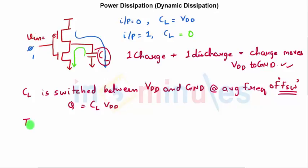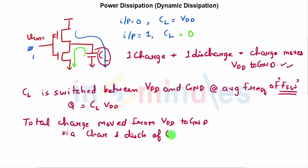So the total charge moved from V_DD to ground via charging and discharging of C_L in one second would be nothing but one (this is one second) into the times C_L is switched that is F_SW and the total charge which it transfers which is nothing but C_L into V_DD.